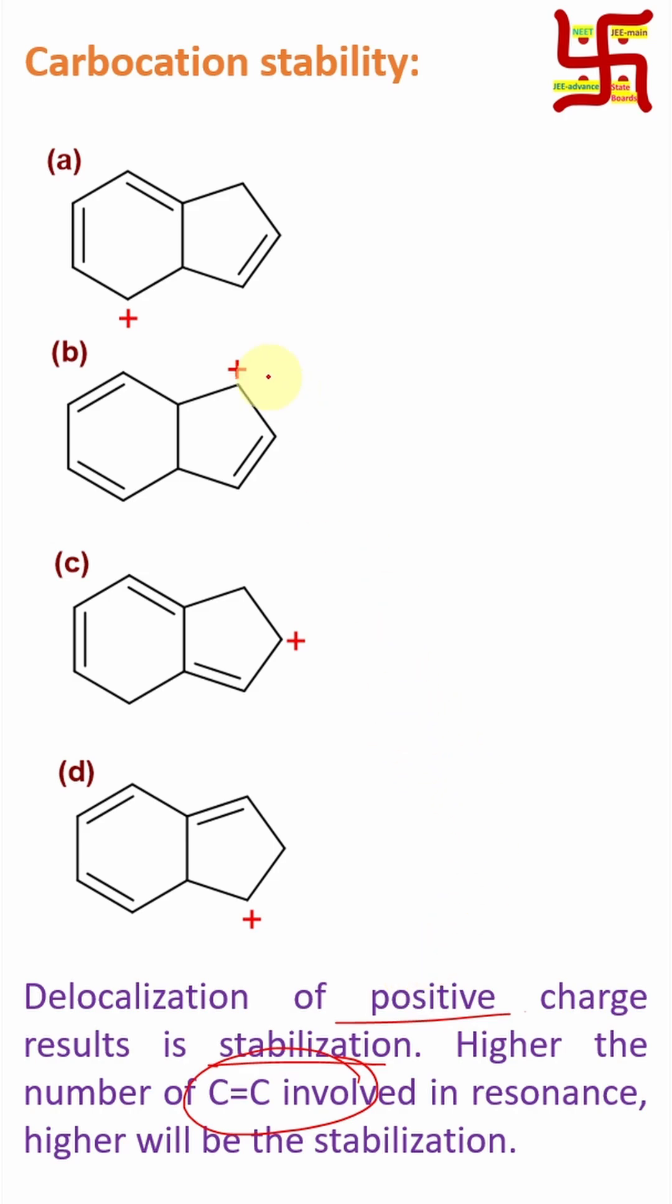So here for this question we need to check how many double bonds are in conjugation with this positive charge. Now if you look at the first one there is one double bond, two double bonds. If you look at this there is only one double bond.